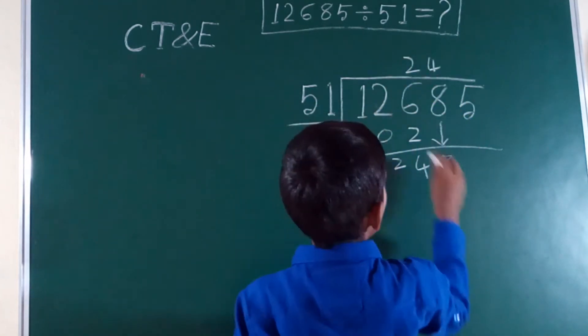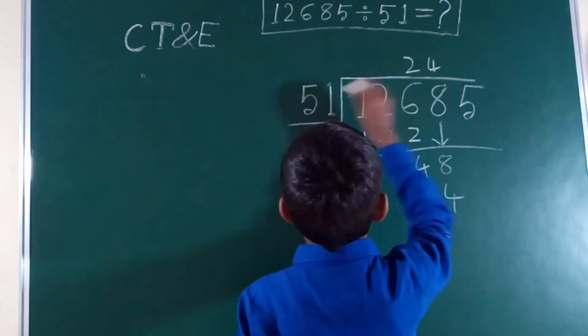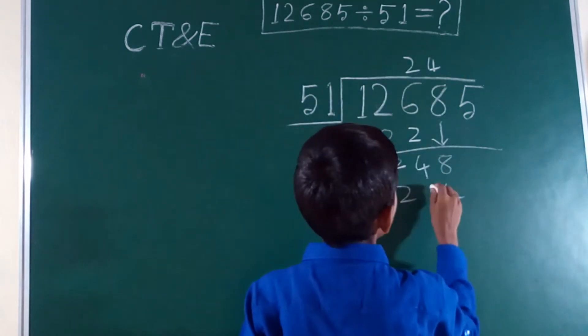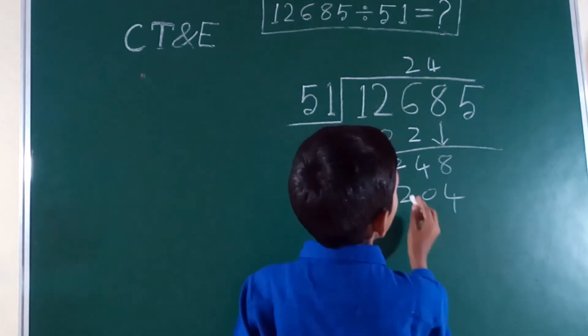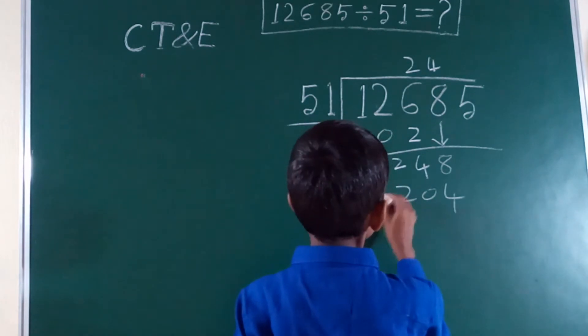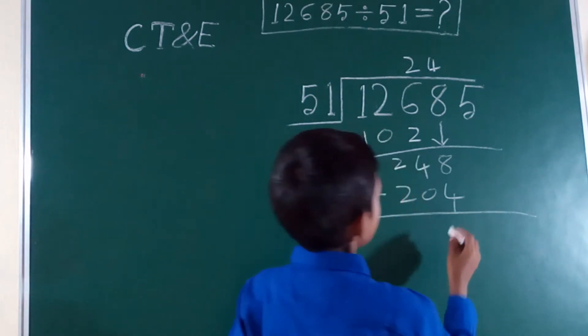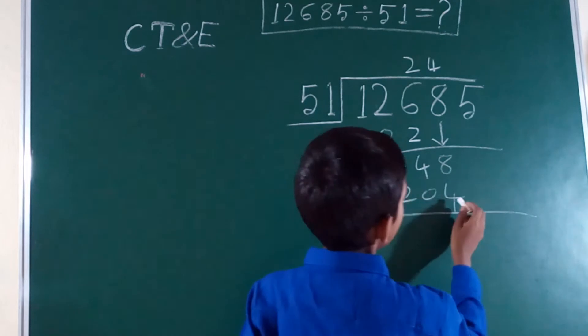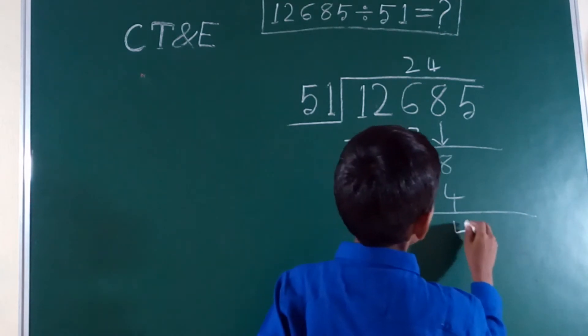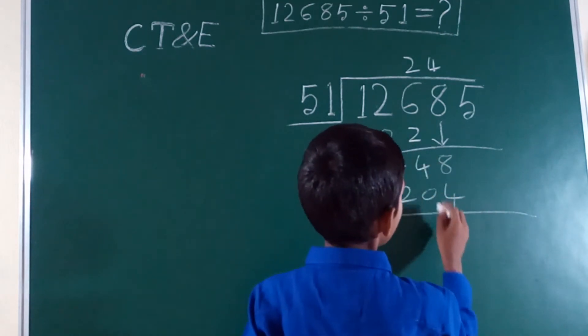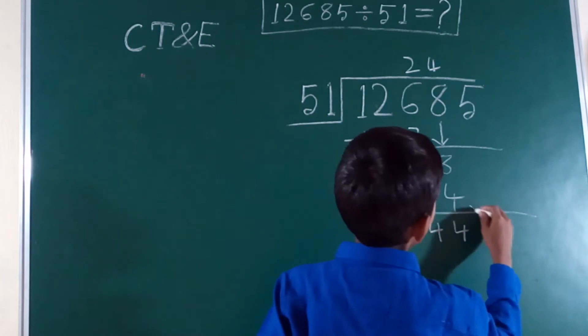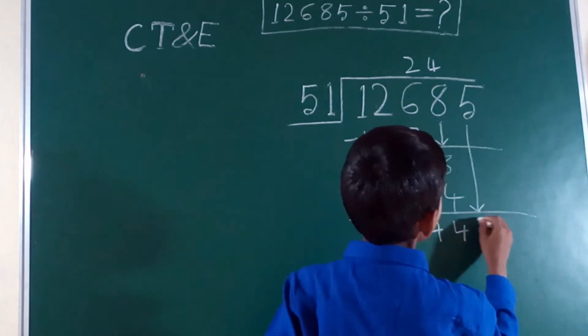4 times 1 is 4, 4 times 5 is 20, so we got 204. We write 4. 248 minus 204 is 44, and 5 will come down.